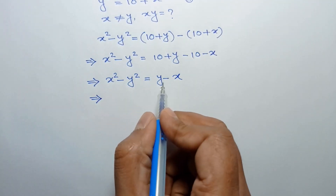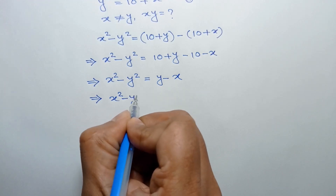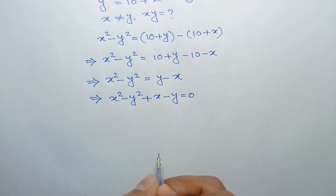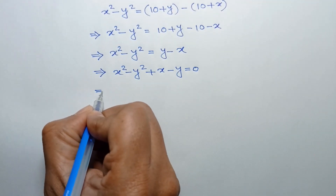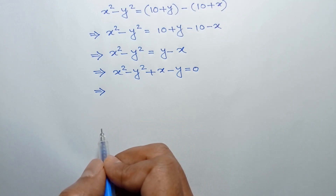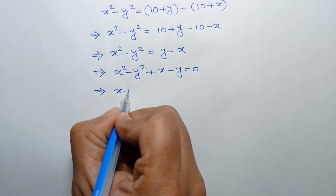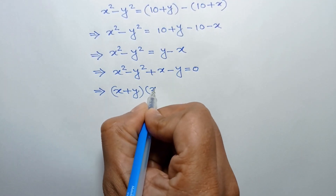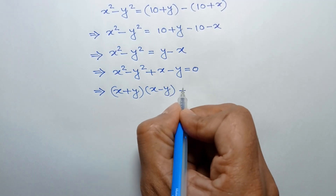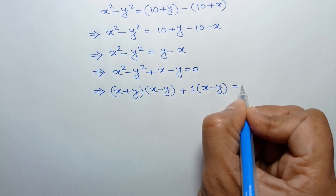Taking the right side to the left, we can write x squared minus y squared plus x minus y is equal to 0. Applying the formula a squared minus b squared equals (a plus b)(a minus b), we get x plus y times x minus y, and taking 1 common from the last two terms, we write plus 1 times x minus y.